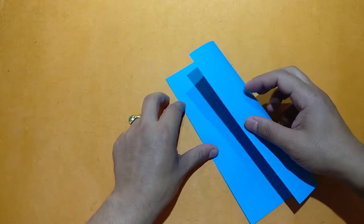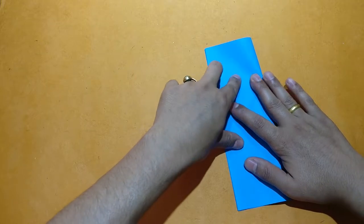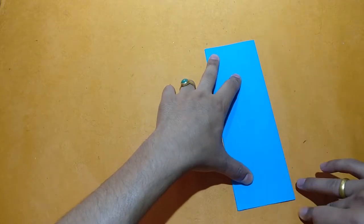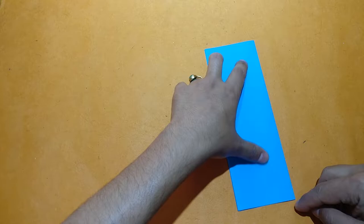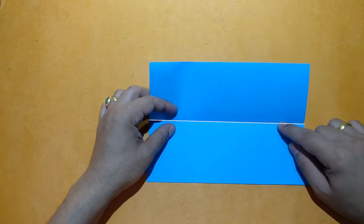Again fold the paper into half. Swipe it through the middle, unfold it, and you can see a middle line.